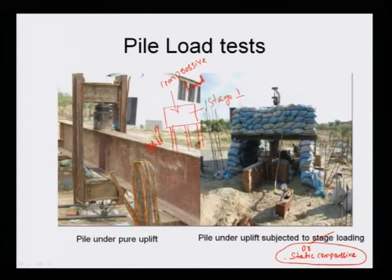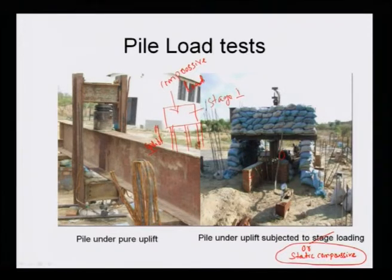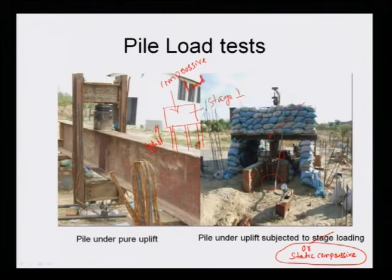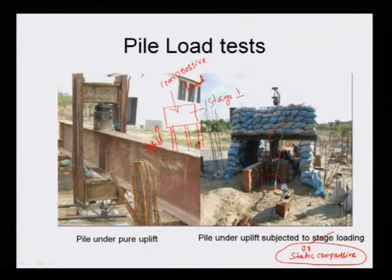For the test, a single pile is used with a platform made at both ends. A girder is placed on this platform, and anchor piles are located at each end, with their reinforcement connected to the girder. To keep the platform stable and centric so it does not fall, sandbag filling is placed.